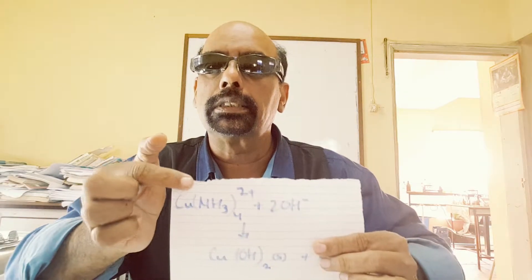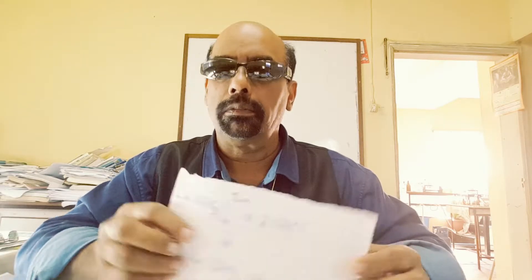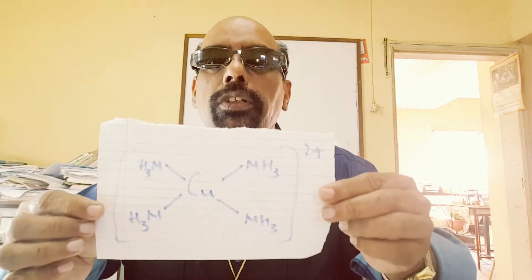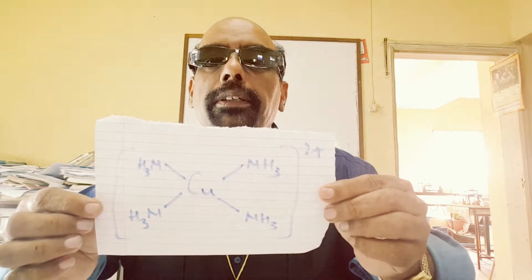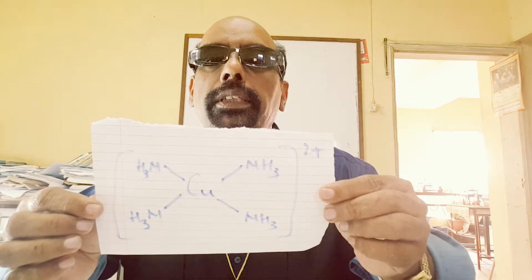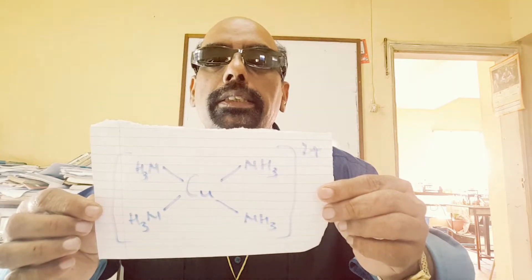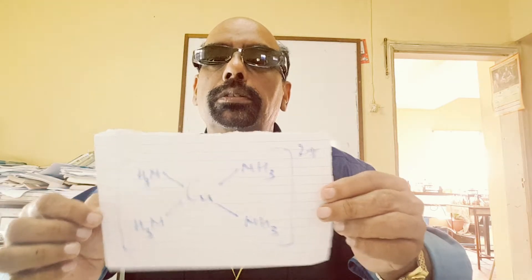The deep blue solution contains copper bonded to four ammonia molecules. The central copper ion has four ammonia molecules datively bonded to it — ammonia here acts as a ligand — and the overall charge is plus two.